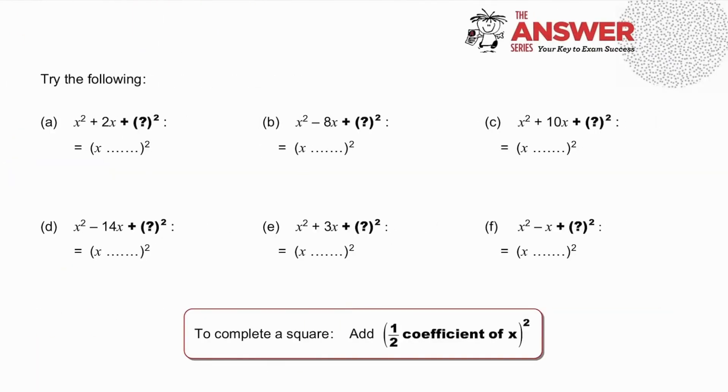Pause to try the following. What square do we want? And what do we need to add to x² + 2x to achieve that? x² - 8x, x² + 10x, etc. When you've tried them all, see if you arrive at this conclusion.